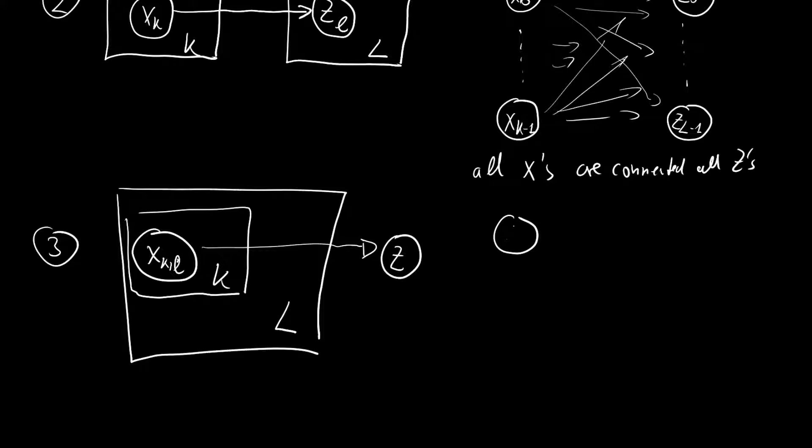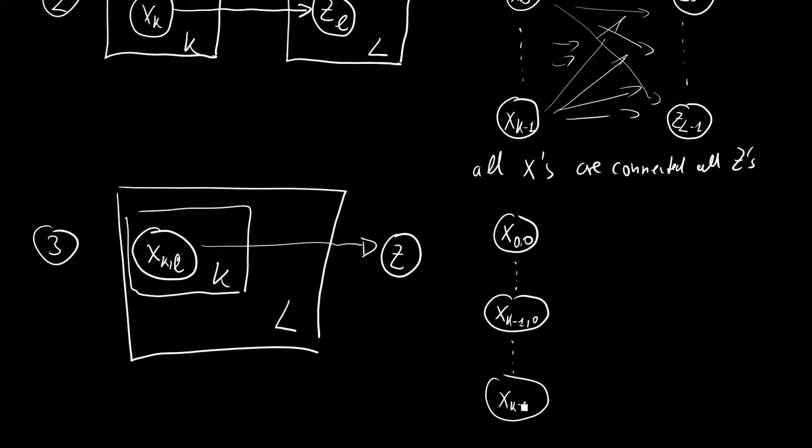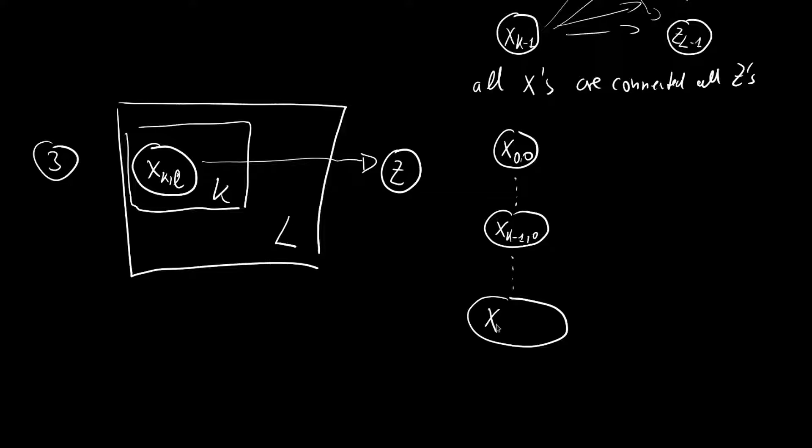So we have an x zero zero all the way to x k minus one zero, all the way to x k minus one l minus one. Let's make this a little more clear. So let's put this bigger. So we have an x k minus one and x l minus one and we have one z and all of them are going here. So we have all x's again go to one z.